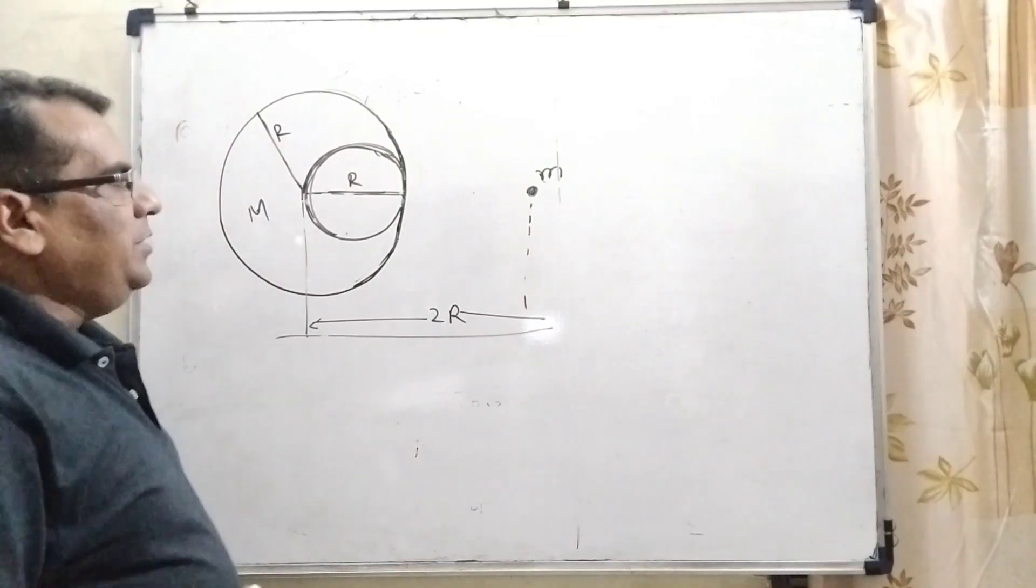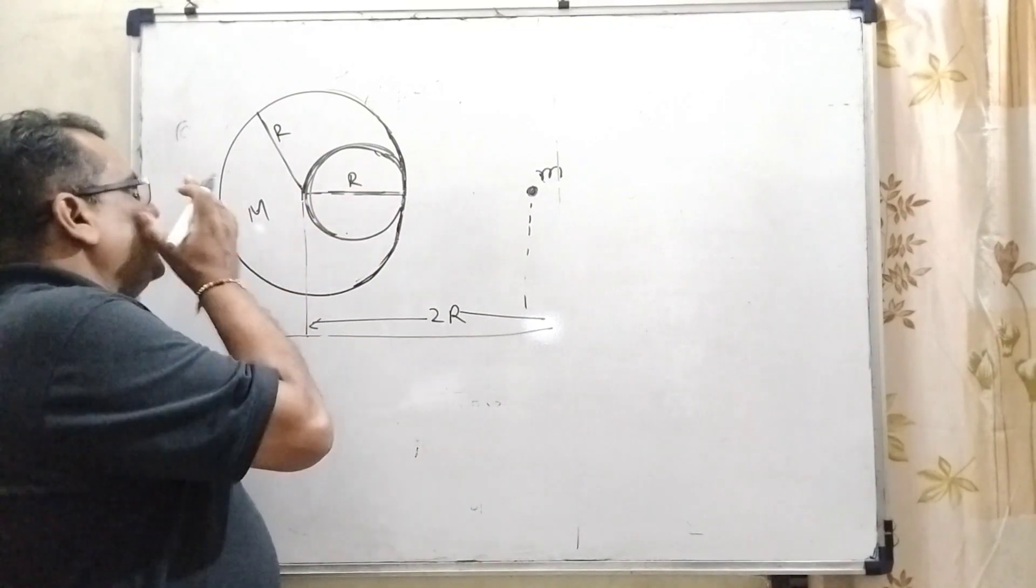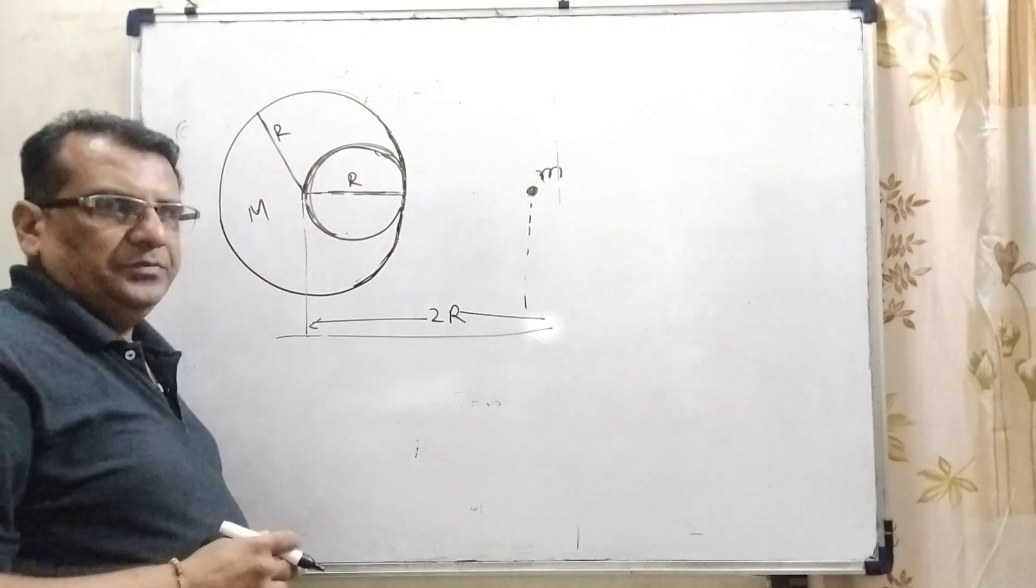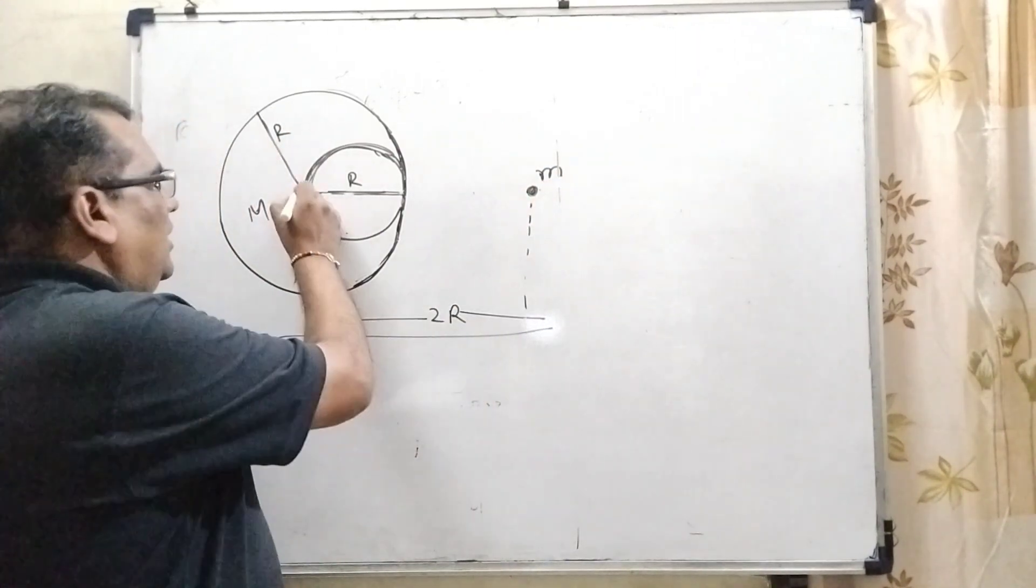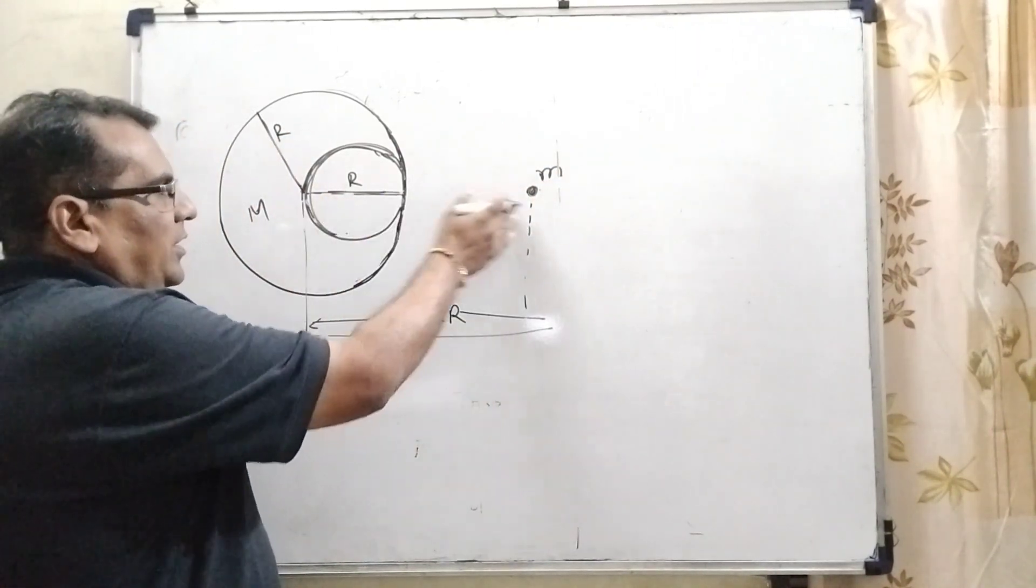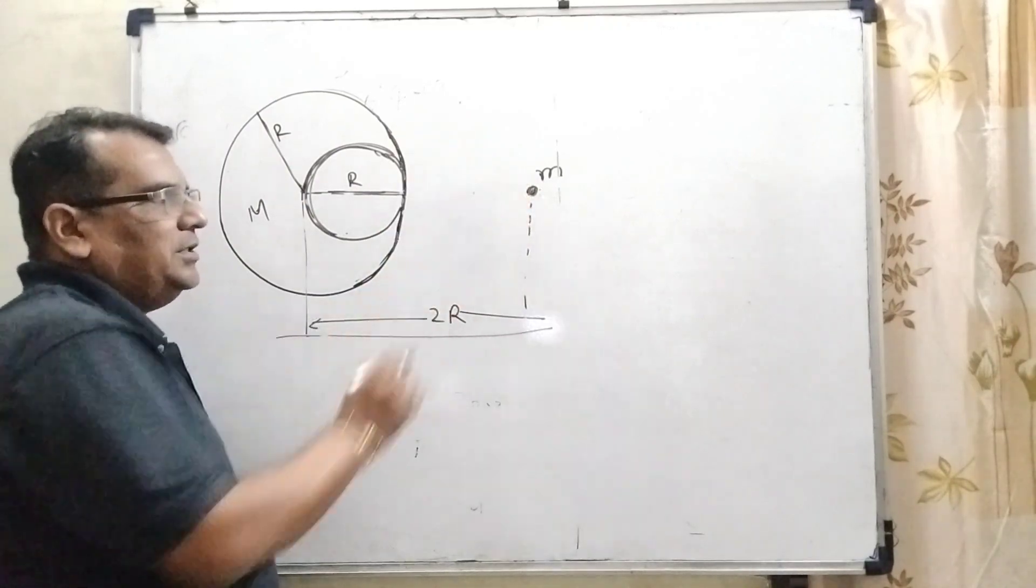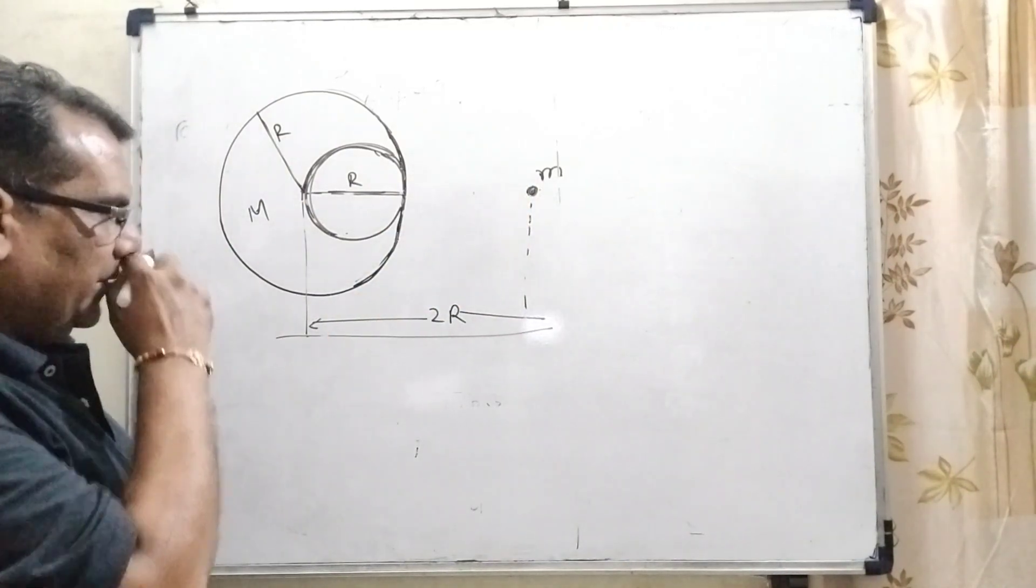Now according to the question, we have given a big sphere having the mass capital M, radius R. And another point object having the mass small m, which is 2R distance away from the center of this big sphere.